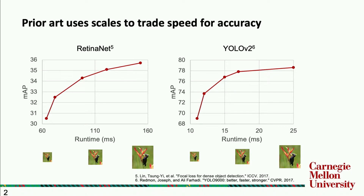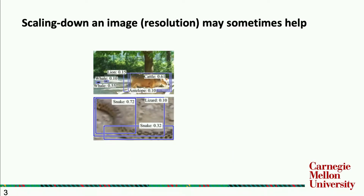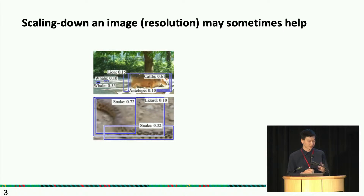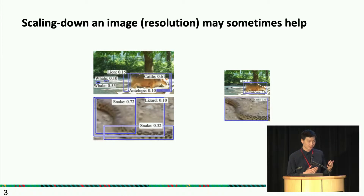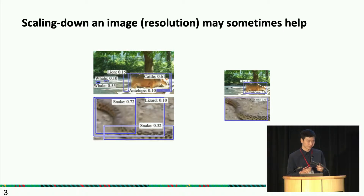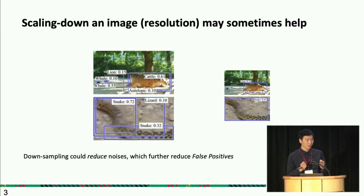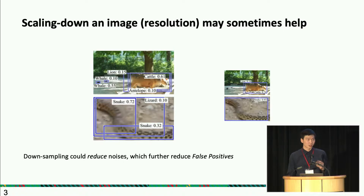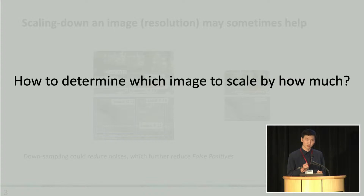In this work, our key observation is that scaling down an image in terms of resolution might sometimes actually help for certain images. We show two images here downsampled to the commonly used 600 in shorter-side resolution, fed to a pre-trained object detector. As you can see, there are many false positives. If we downsample these images, the false positives go away — improving both accuracy and speed. This happens because downsampling can reduce noise in the image and reduce false positives. So the key question is: how do we determine which image to scale by how much? Our solution is to formulate this as a regression problem.